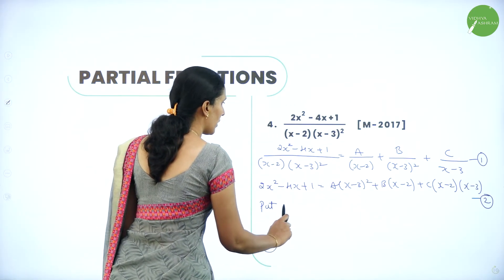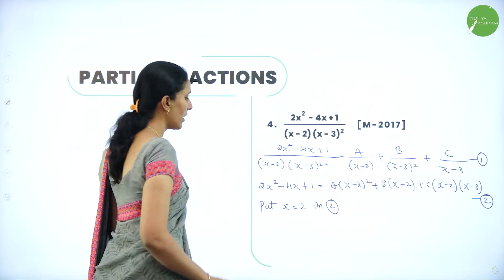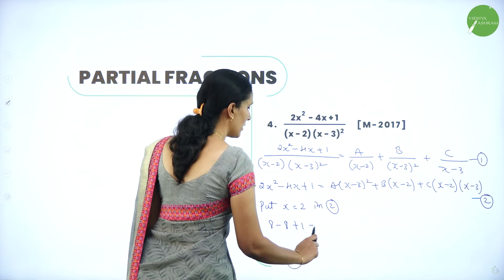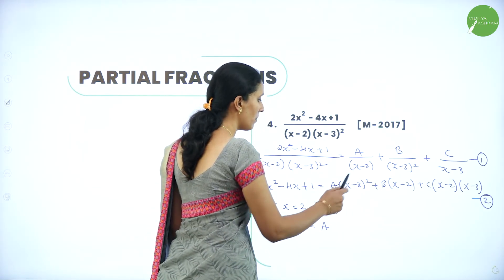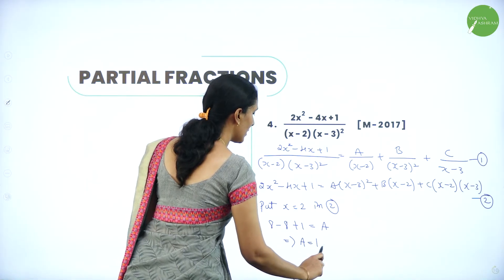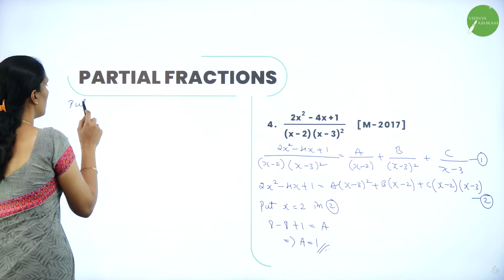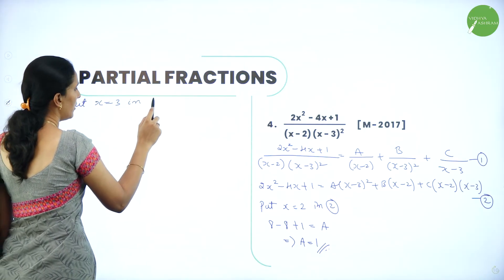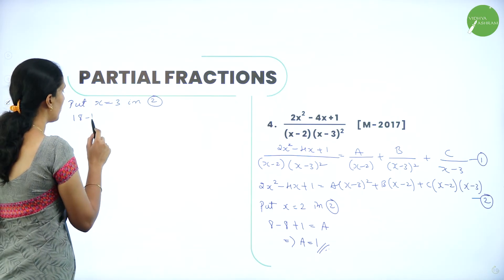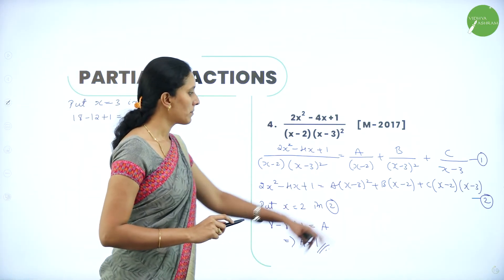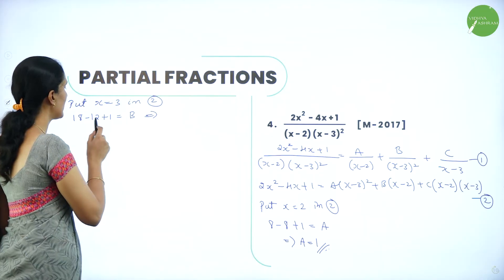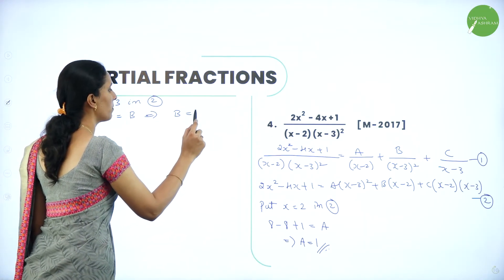Put x = 2 in equation 2: 2(4)−4(2)+1 = 8−8+1 = 1 = A(2−3)² = A(1). So A = 1. Next, put x = 3 in equation 2: 2(9)−4(3)+1 = 18−12+1 = 7 = B(3−2) = B. So B = 7.